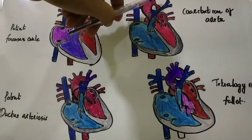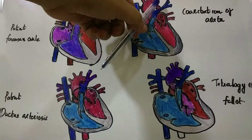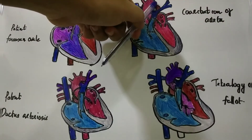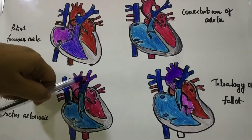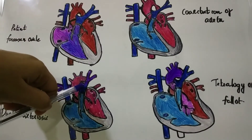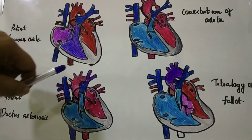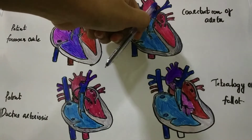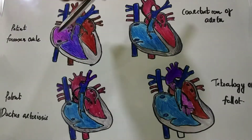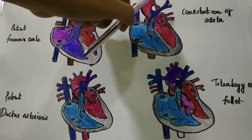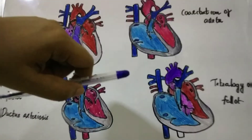Next is coarctation of the aorta. It is the abnormal narrowing of the aorta, usually seen in the place where the remnants of the ductus arteriosus were present. During fetal circulation there is a connection between the aorta and the pulmonary trunk to bypass pulmonary circulation. In some conditions the coarctation is fairly benign and not detected until later in life.